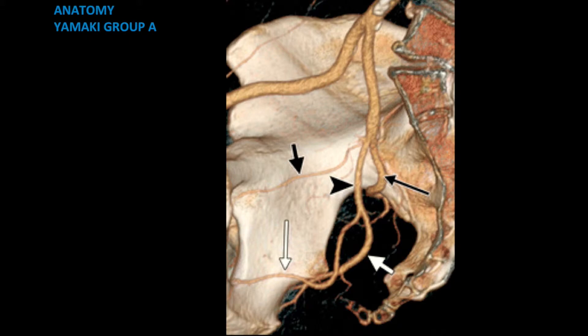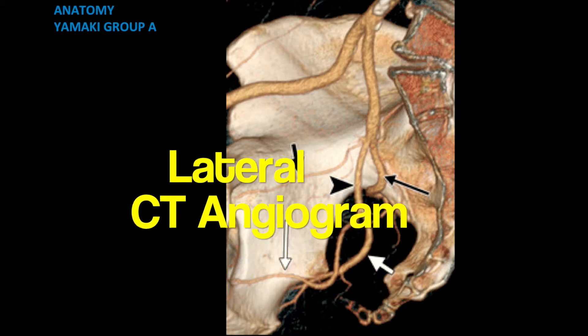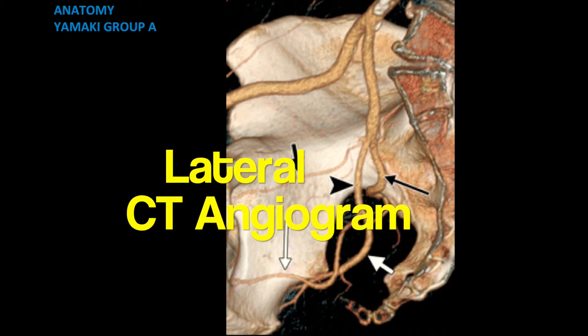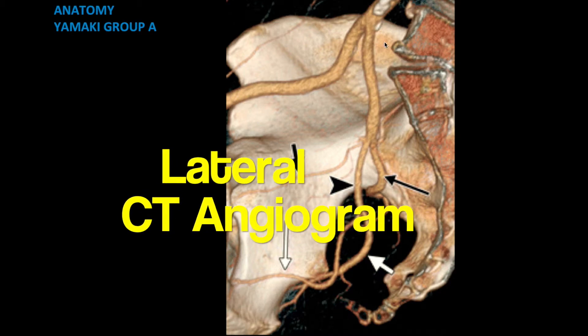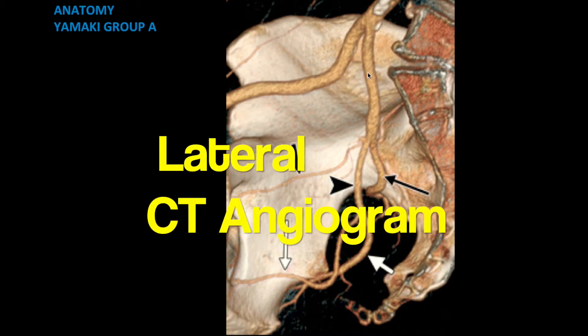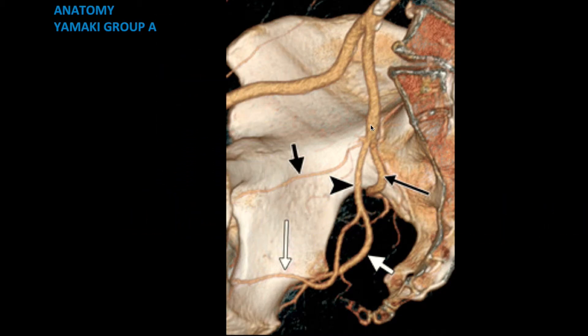Let's get started with orientation. The orientation here is a lateral projection of a CT angiogram. You have the main internal iliac artery right here, and you'll see it has two main branches.